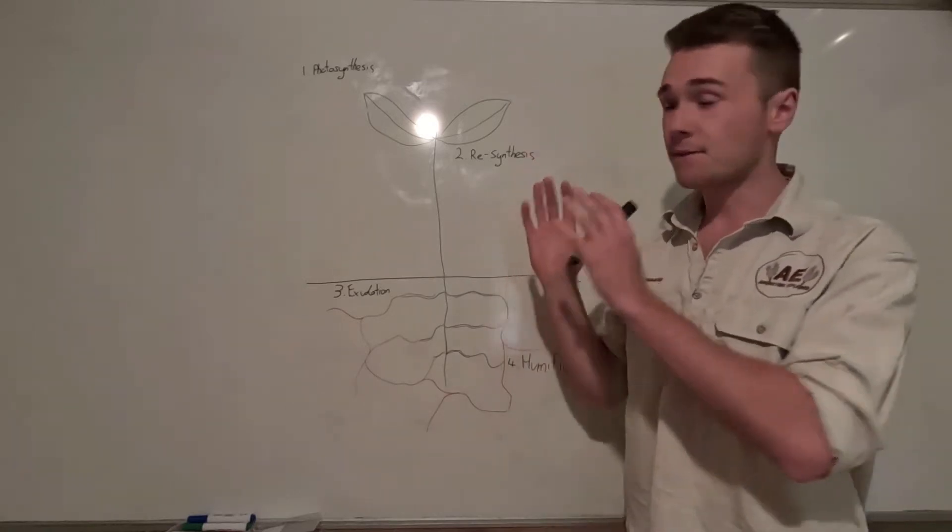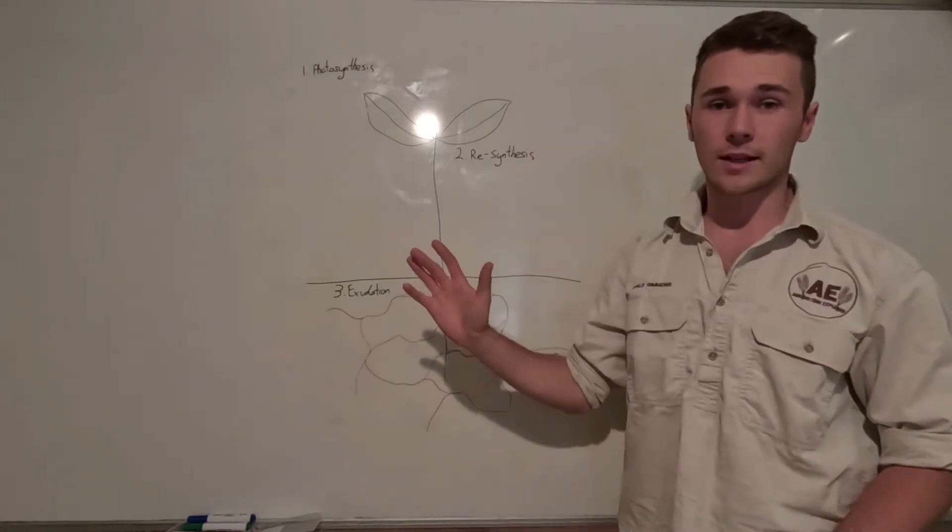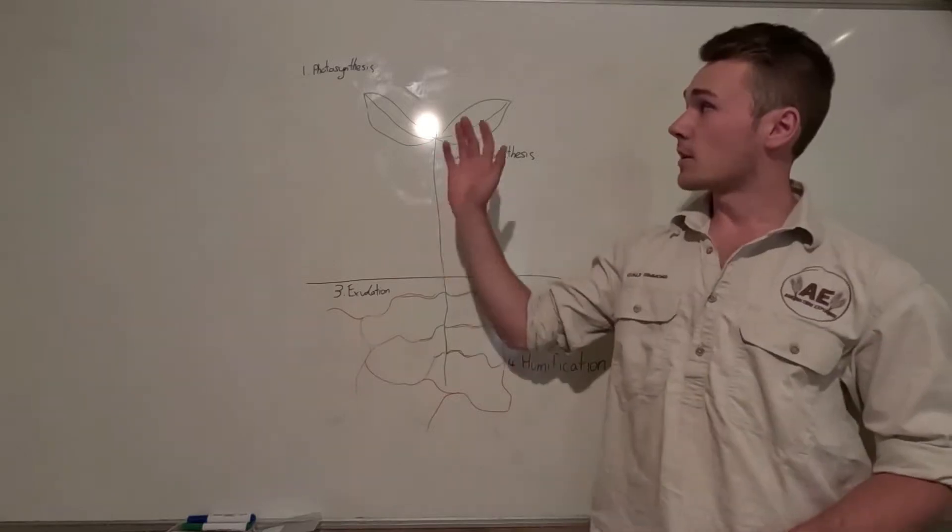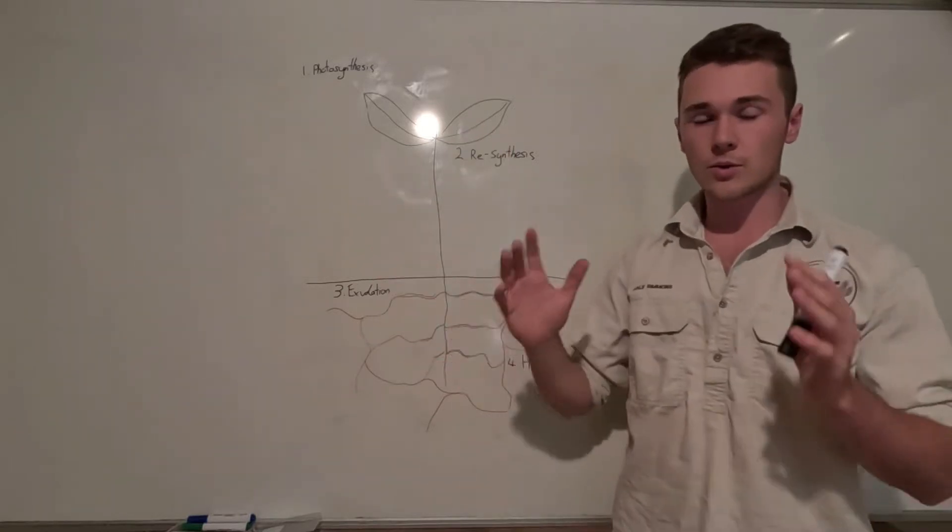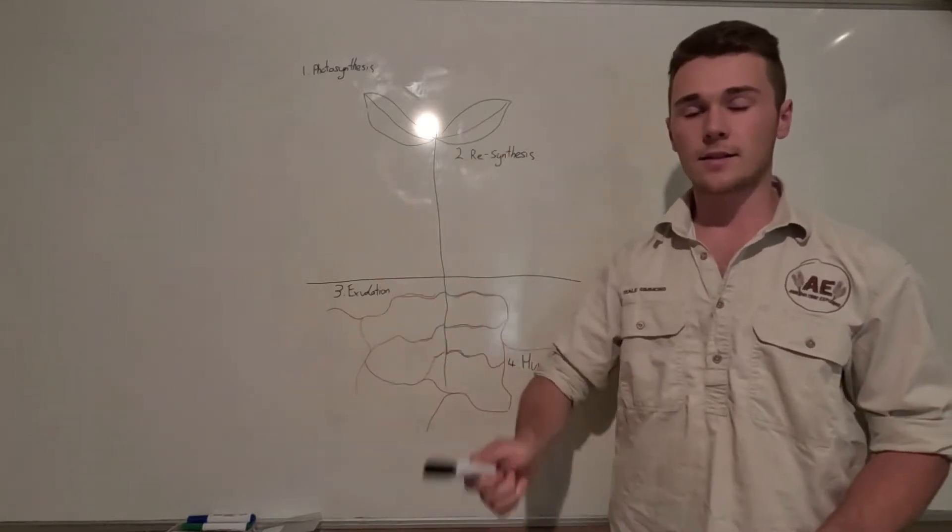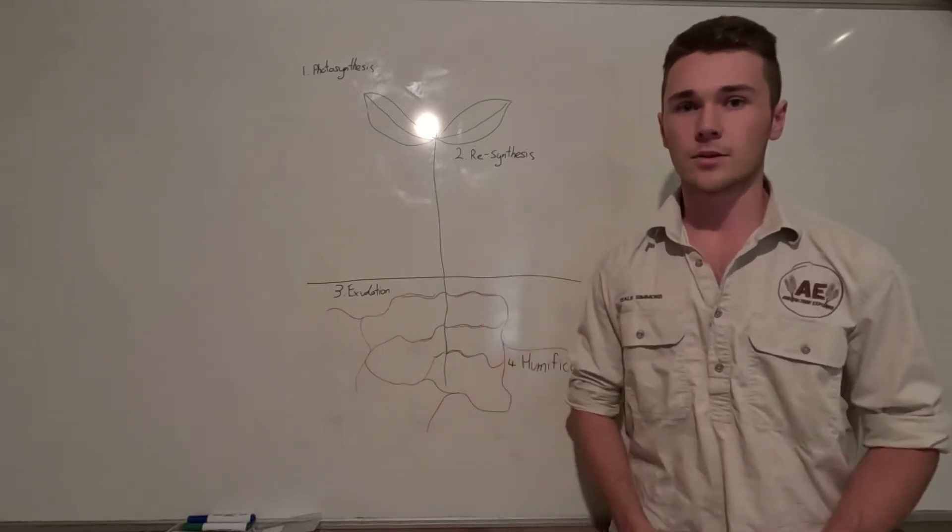I'm going to share with you the fastest and best way to build soil organic carbon in your soil. The number one way to build soil organic carbon is by increasing the humic substances in our soil.